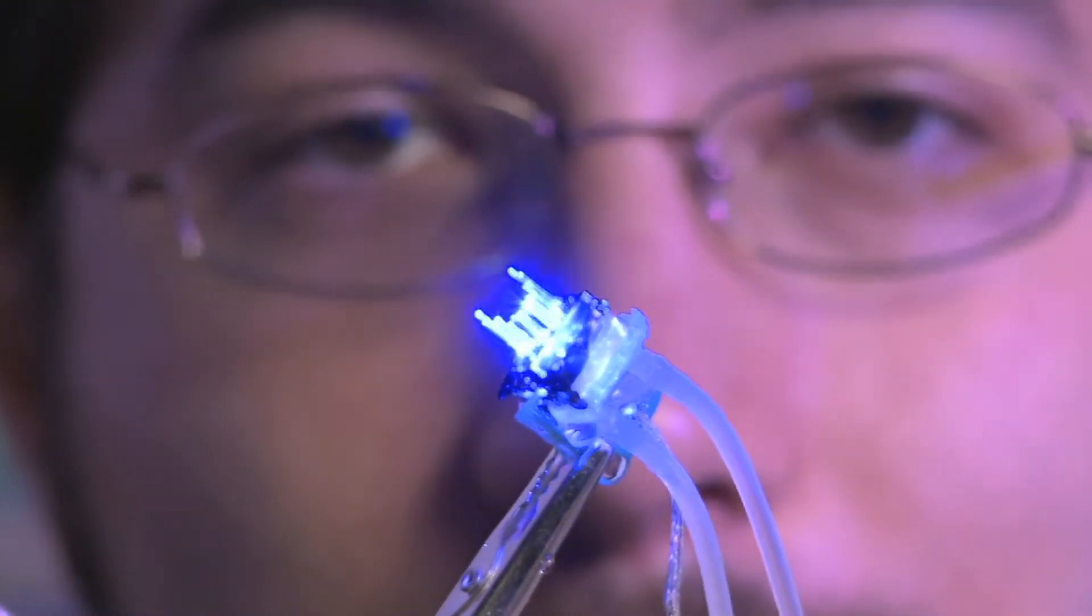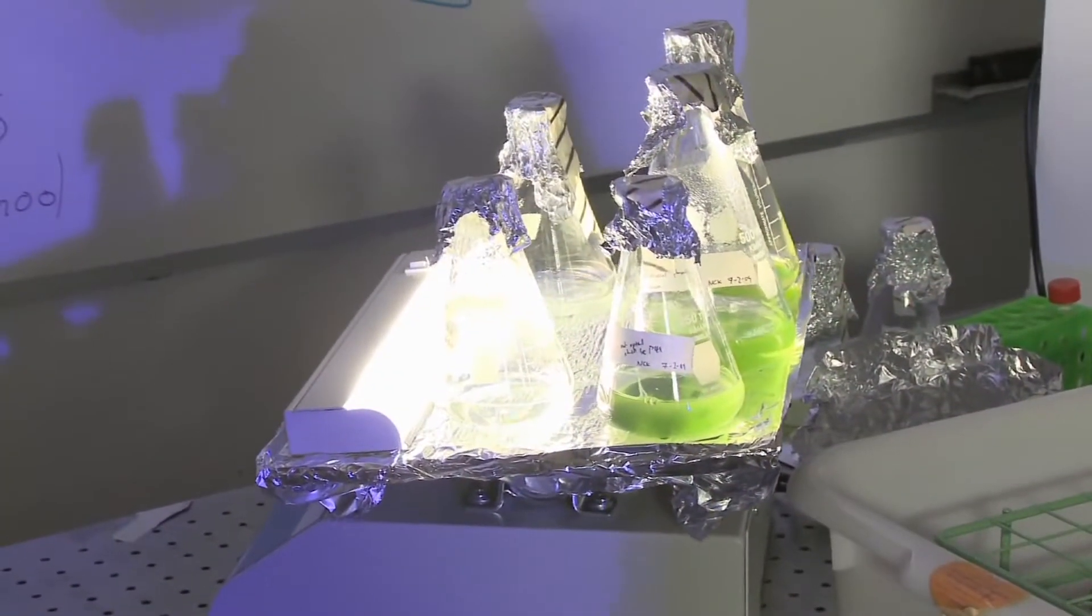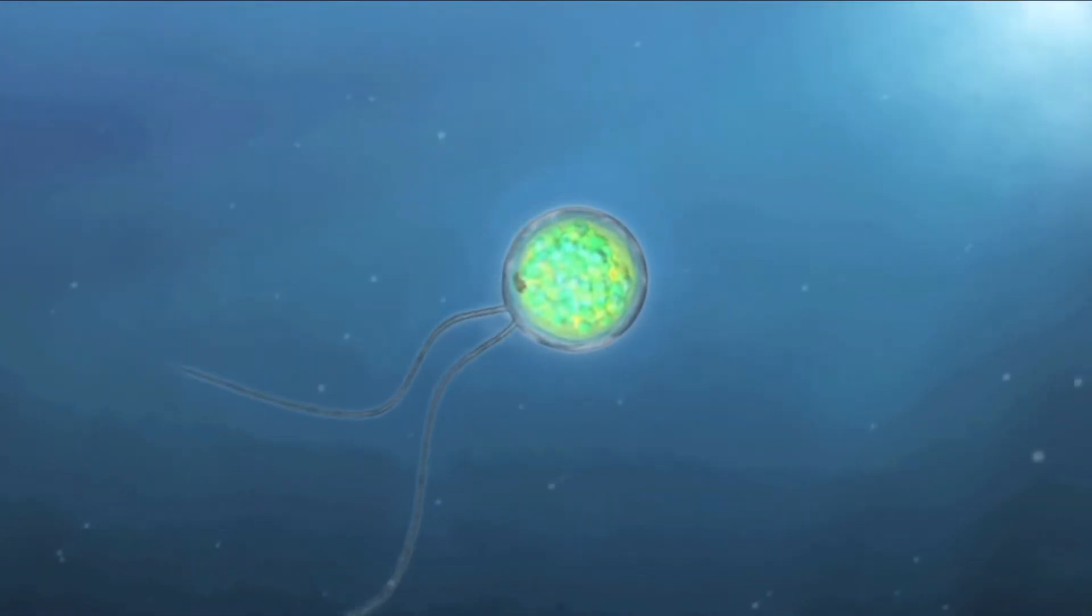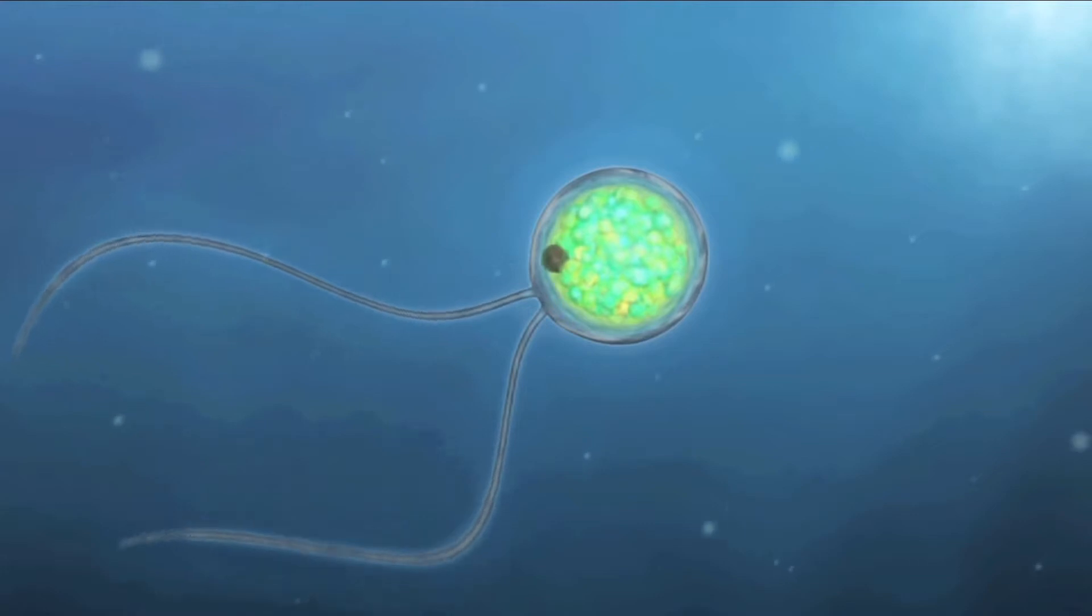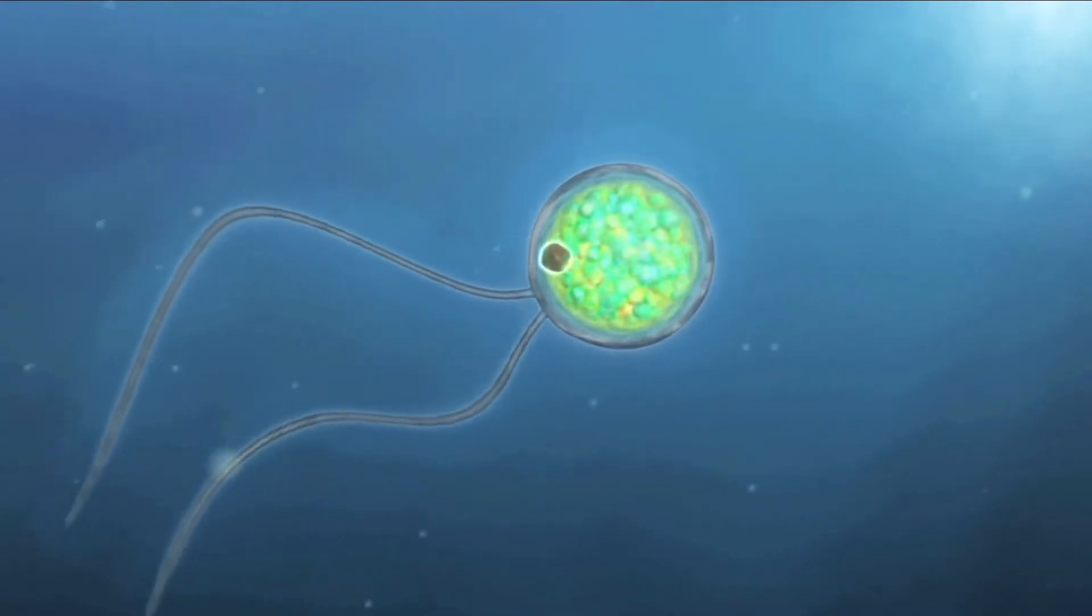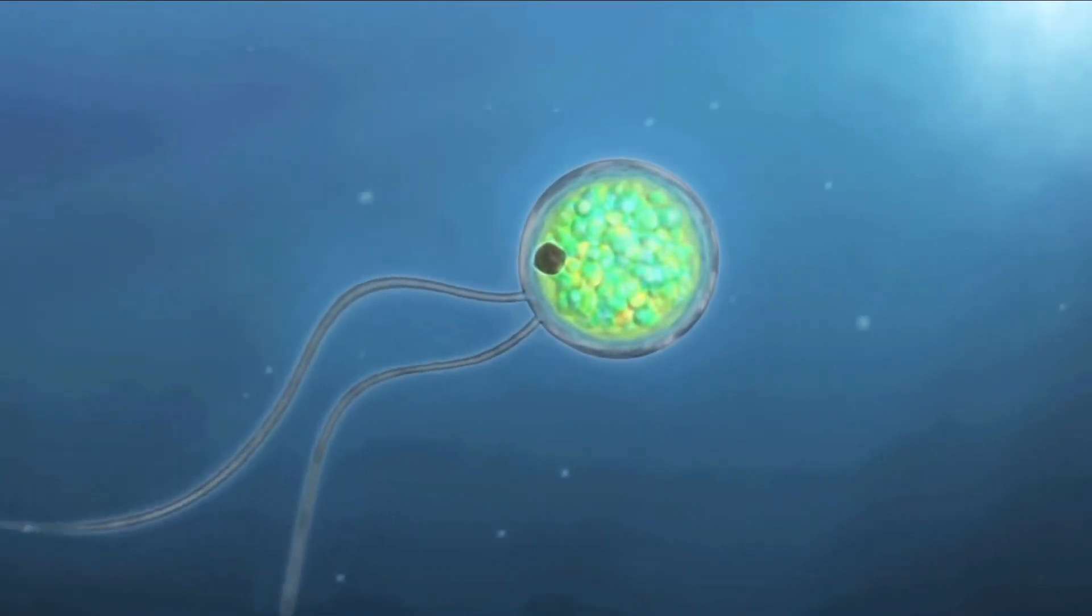Remarkably, these high-tech tools have come from microorganisms such as this pond algae called Chlamydomonas. Chlamydomonas needs light for photosynthesis and swims toward light with the help of a small organelle called an eyespot.